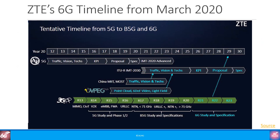Back in March last year at the 6G Wireless Summit 2020, ZTE in their keynote said that they believed 3GPP will start more concrete 6G specifications as part of Release 22, which the company expects to see in 2029. As we saw earlier, the timeline for Release 17 has slipped, but overall there would not be too much slippage when it comes to 6G.